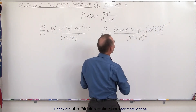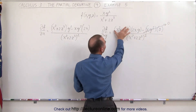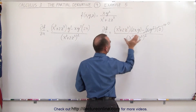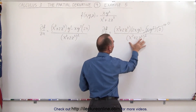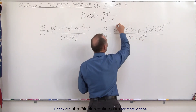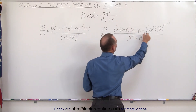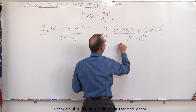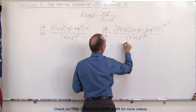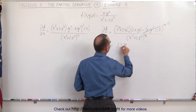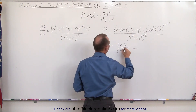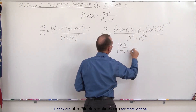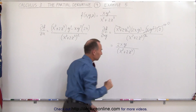You can also see that this can be simplified. We have this quantity here to the first power and this quantity to the second power, which means this cancels out with one of those, and finally we can write this as 2xy divided by the quantity x squared plus 2z cubed to the first power.